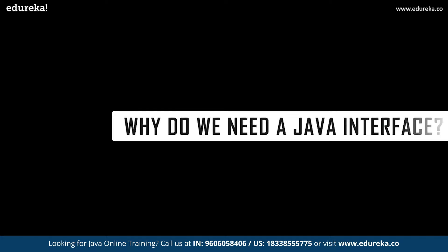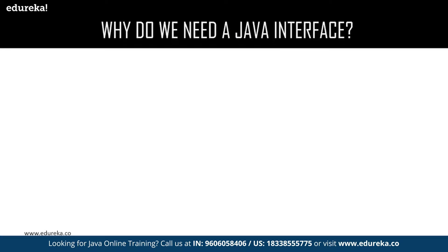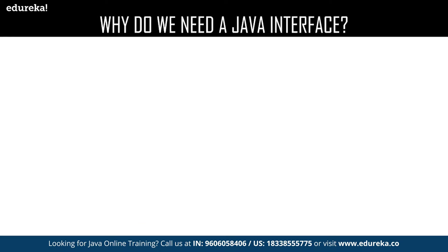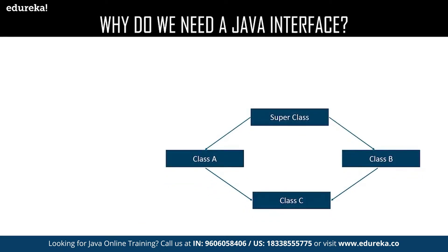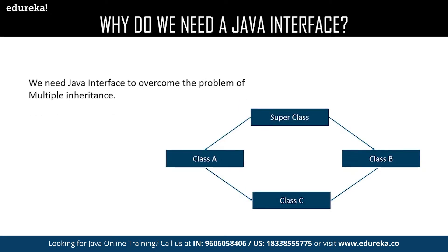You might ask why we need an interface. We all know that Java supports inheritance, but when it comes to multiple inheritance Java cannot support it. It ends up facing ambiguity between two parent classes and fails to provide the required result. This particular problem is called the diamond problem.